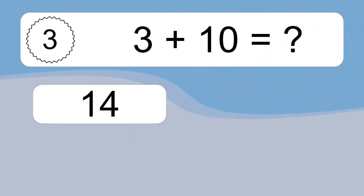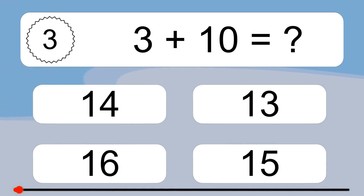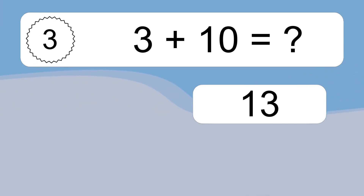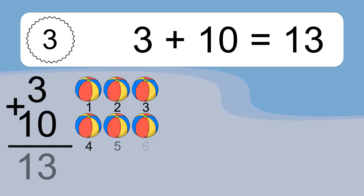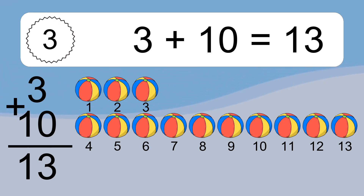3 plus 10 equals what? 3 plus 10 equals 13. Let's count it. 1, 2, 3, 4, 5, 6, 7, 8, 9, 10, 11, 12, 13.